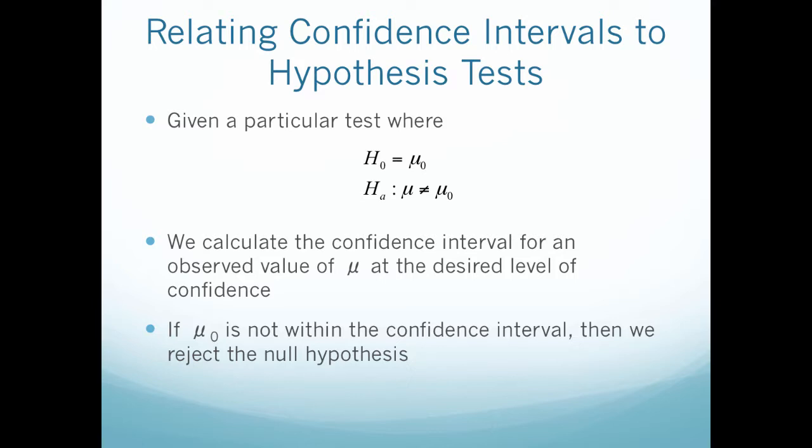So now let's talk about how confidence intervals relate to hypothesis testing. So when we're given a particular test where H0 equals mu and the alternative is that they do not equal each other, we would then calculate the confidence interval for an observed value of mu at the desired level of confidence. If mu0 is not within the confidence interval, we would then reject the null hypothesis.